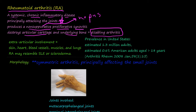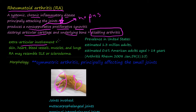In this picture, we can see a hand that is affected by this disorder. You see radial deviation of the wrist — this joint goes this way — while the fingers go the other way. We call this radial deviation of the wrist and ulnar deviation of the fingers. There is also extra-articular involvement; it can affect other parts of the body: skin, heart, blood vessels, muscles, and lungs.